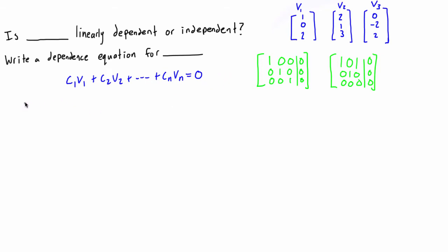The way we solve this is we take all the given vectors and write them as columns of the left-hand side of an augmented matrix: 1, 0, 2 | 2, 2, 1 | 3, 0, -2, 2. We set all of the right-hand side to zeros and then apply elementary row operations to get it into reduced row echelon form.